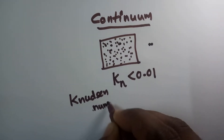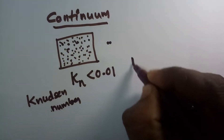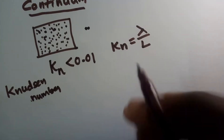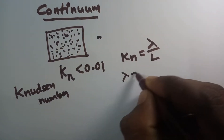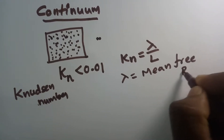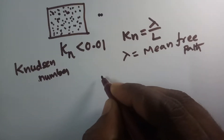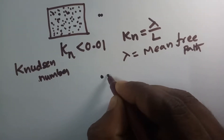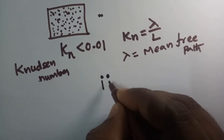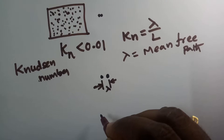Let us see what is meant by Knudsen number. Knudsen number tells that Kn equals lambda by L. What is lambda? Lambda is called the mean free path. What is meant by mean free path? Mean free path is nothing but the distance between the two molecules of the fluid before the collision. Before collision, what is the distance between the two molecules? That is called mean free path.